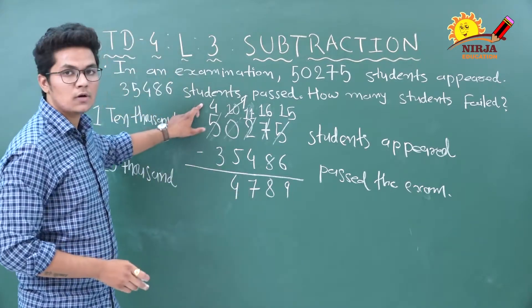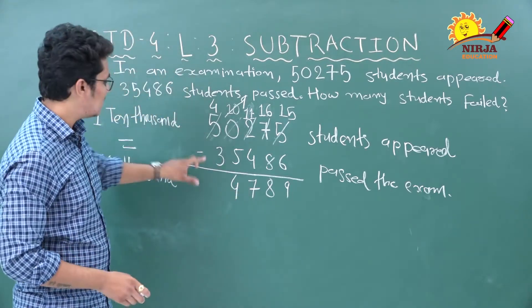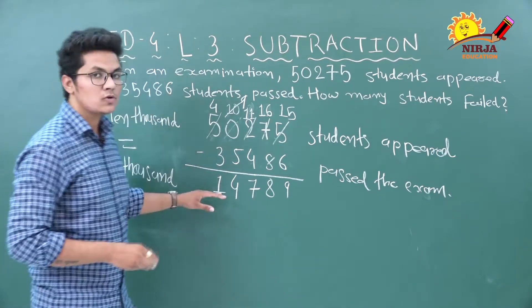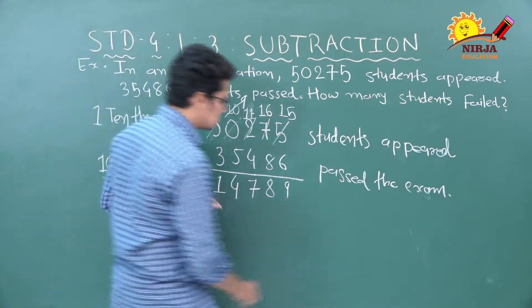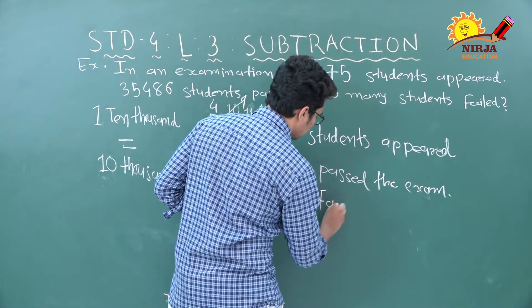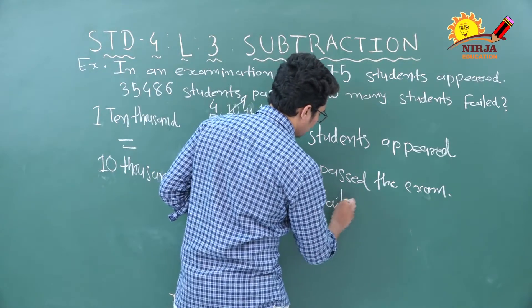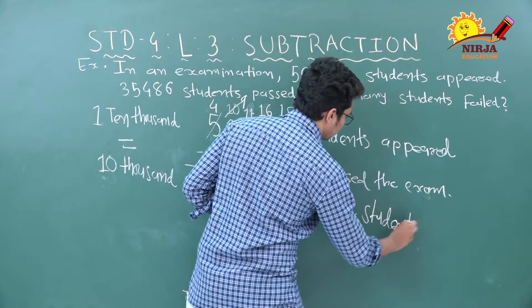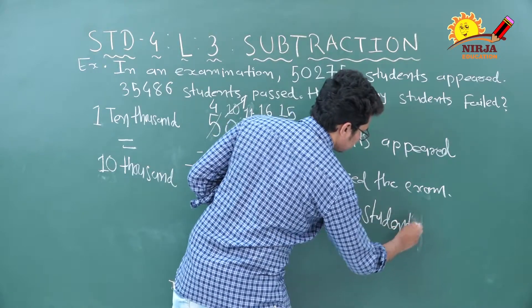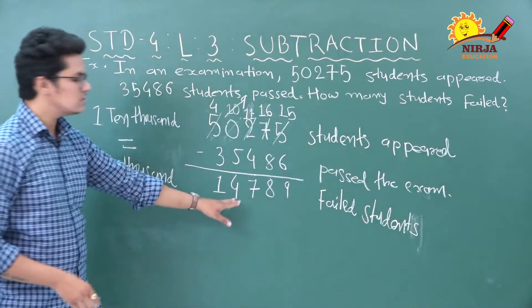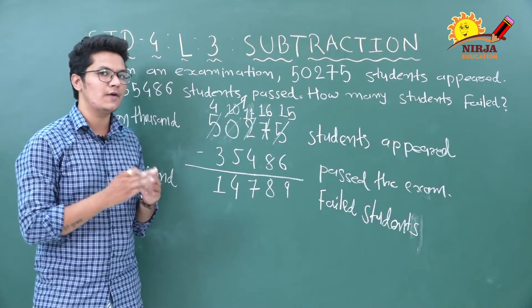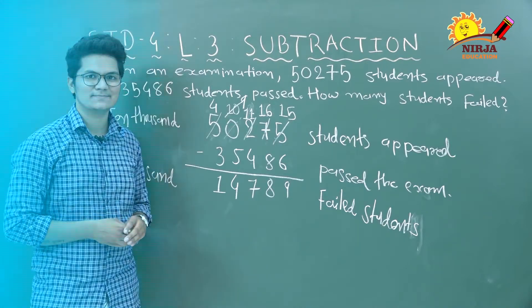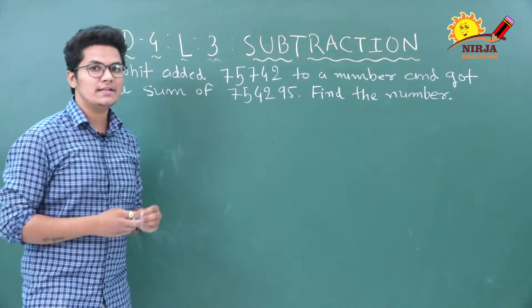So how many students failed? 14,789 students failed in the examination. Now let's look at the next example.